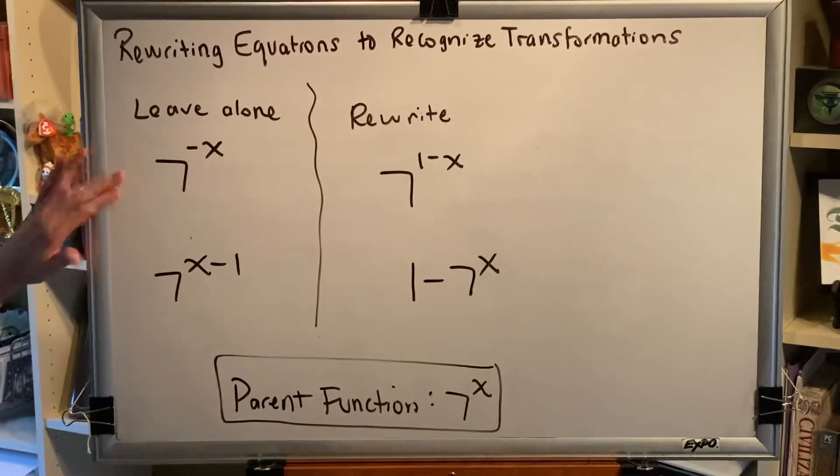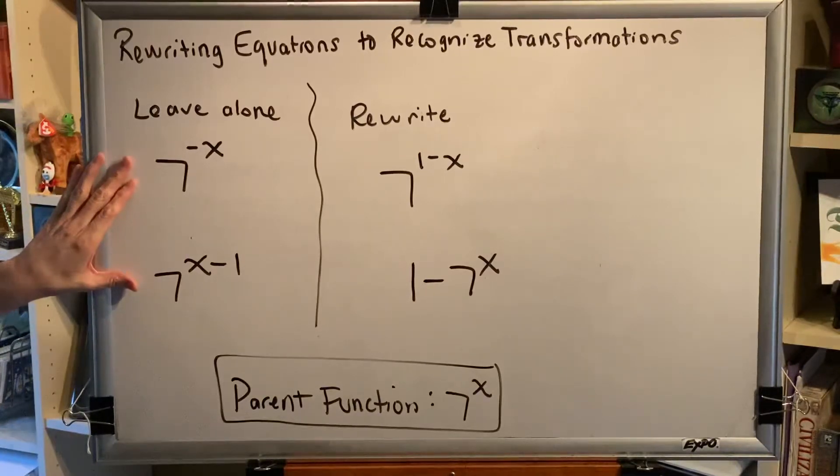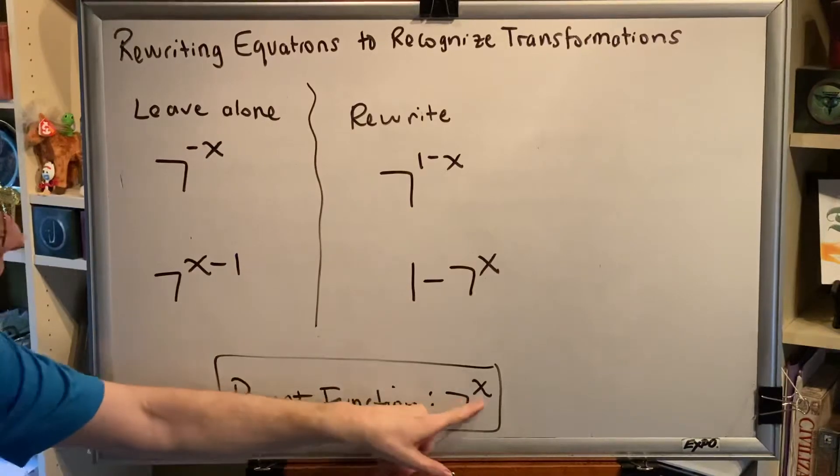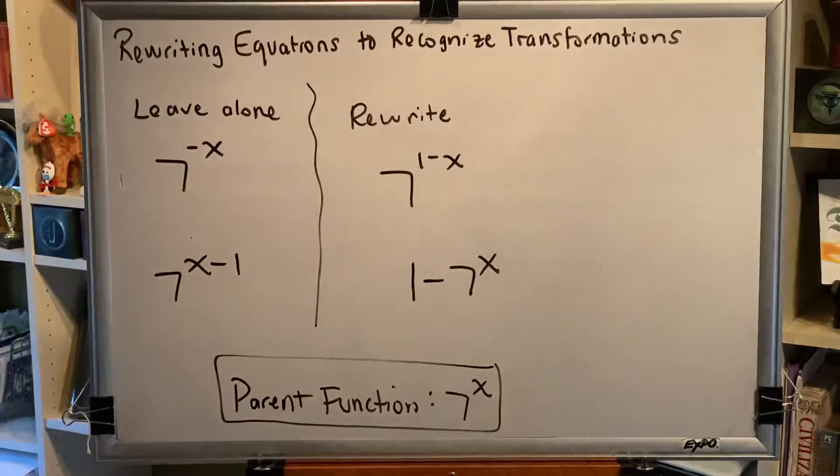Let's start with the ones we're going to leave alone. We're going to leave these alone because we can see the transformations directly by looking at what's been presented to us. For example, 7 to the negative x is the same thing as 7 to the x, it's just that the x has been replaced by a negative x, which indicates horizontal reflection.